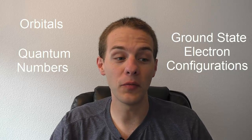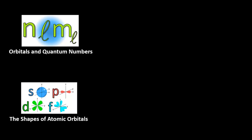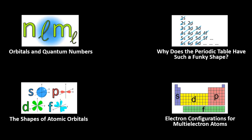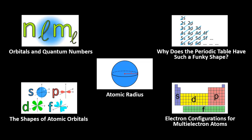If you don't, or if you just need a little bit of a refresher, I do have some videos that you might find helpful. There's my video on orbitals and quantum numbers, my video on the shapes of atomic orbitals, a video called 'Why Does the Periodic Table Have Such a Funky Shape?', which is basically an introduction to ground state electron configurations, my video on electron configurations for multi-electron atoms, and my atomic radius video. Click the corresponding thumbnail images if you're interested in watching any of these.